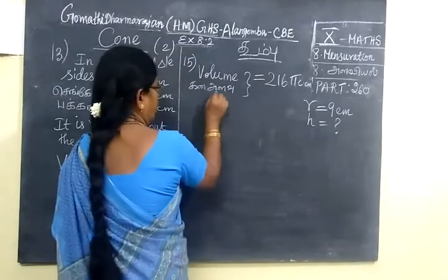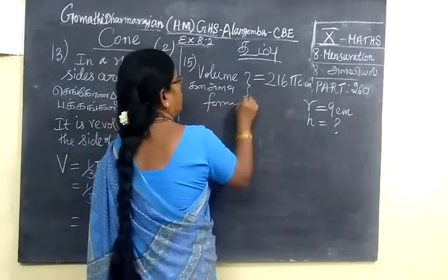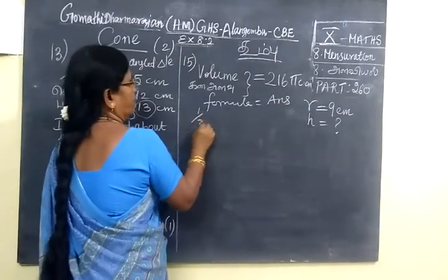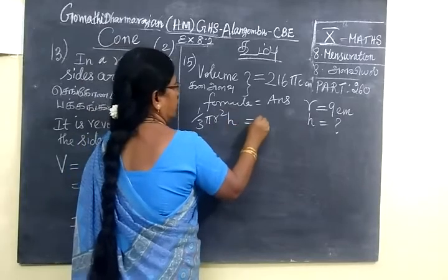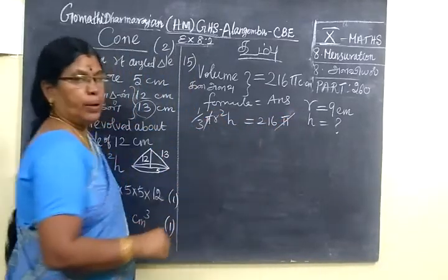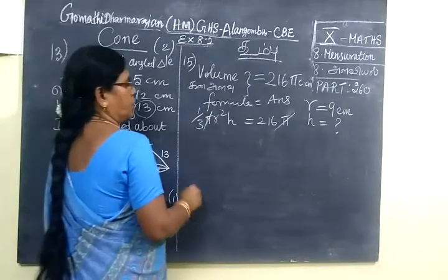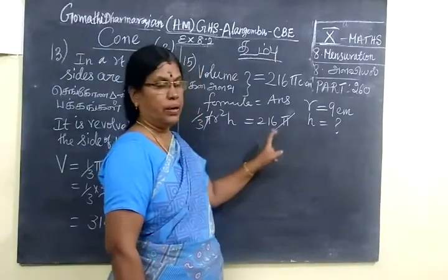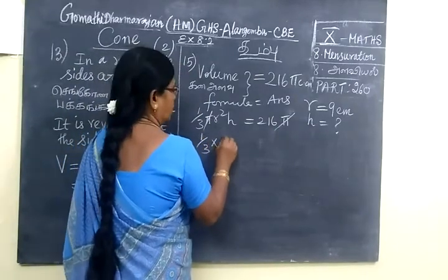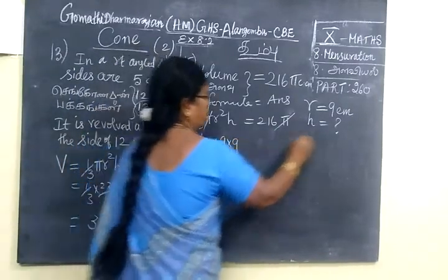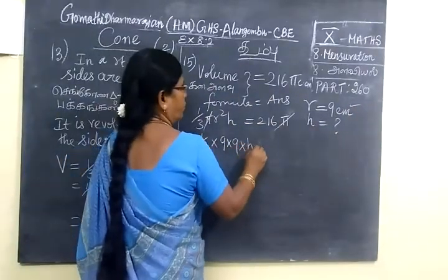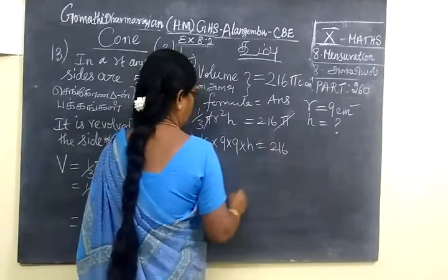Answer given, you are referring to formula. So formula equal to answer. So 1/3 π r² h equals 216. At the end, substitute and cancel. So 1/3 × π × 9² × h - R is given as 9 cm, h we want to find - equal to 216.